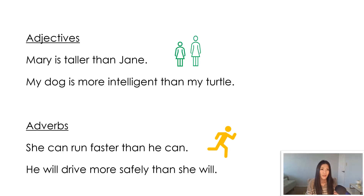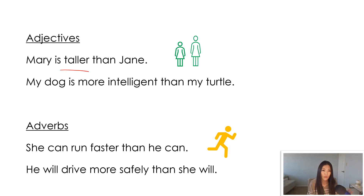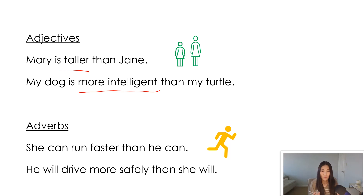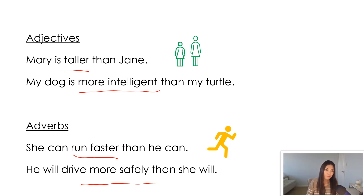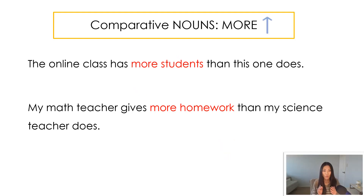For a very brief review — for adjectives we say 'Mary is taller than Jane,' and 'My dog is more intelligent than my turtle.' For adverbs we can say 'She can run faster than he can,' or 'He will drive more safely than she will.' So I think we're familiar with comparative and superlative adjectives and adverbs.